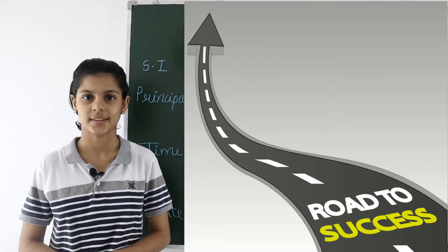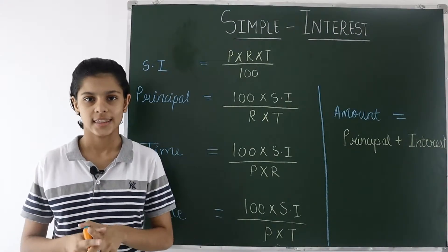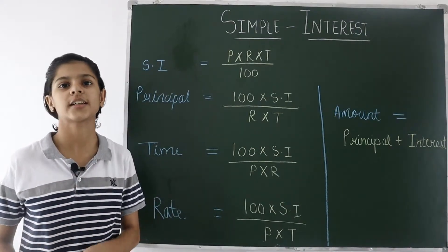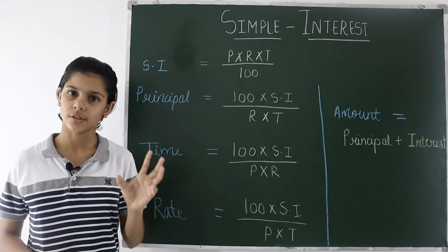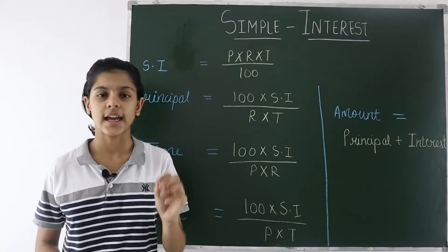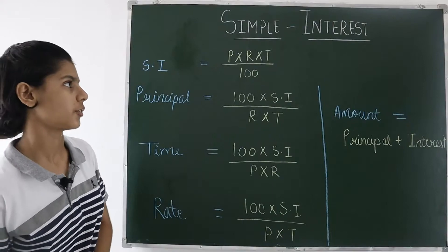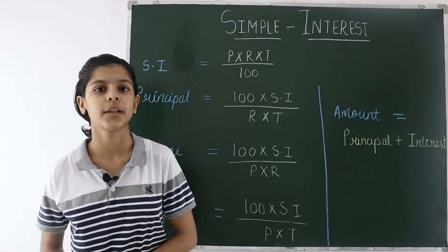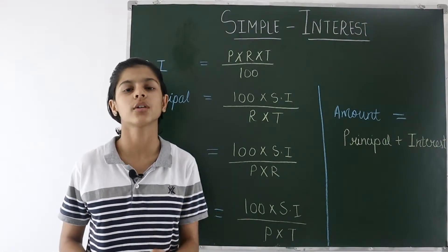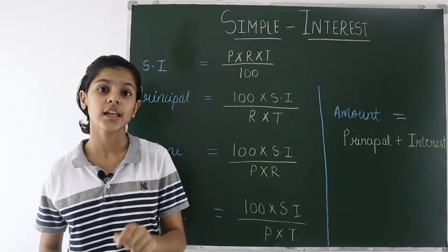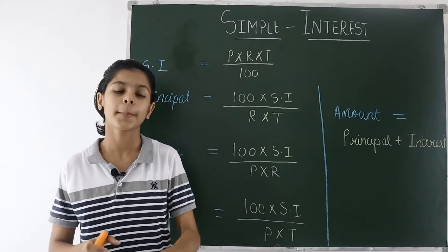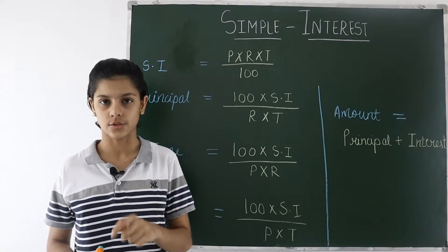Now let's get started with our topic — Simple Interest. You may already be aware of what interest is. When we borrow an amount of money for some time, we have to pay some extra money on that — that is the interest. For example, if I have borrowed 10,000 from the bank for two years, when I return that 10,000 after two years I will not pay just 10,000 — I will pay some extra money, and that extra amount is known as interest.